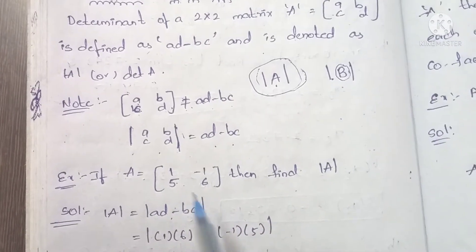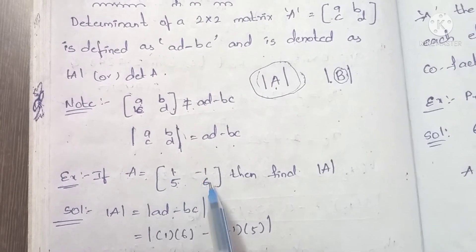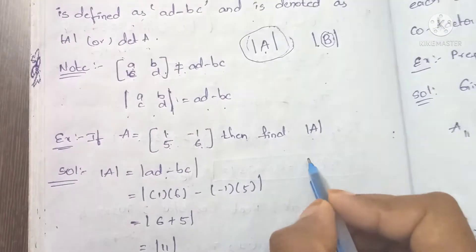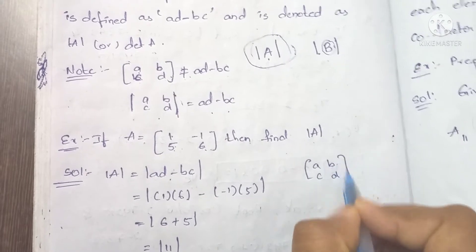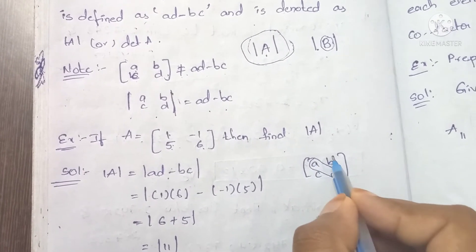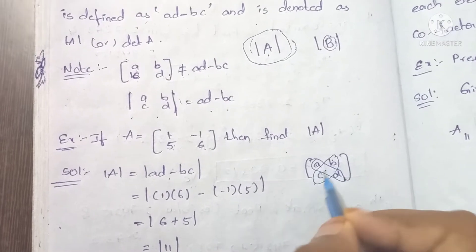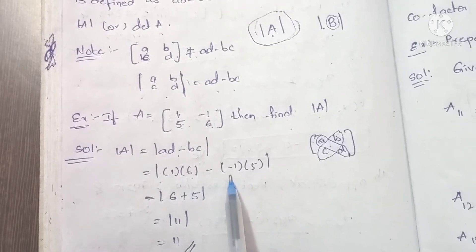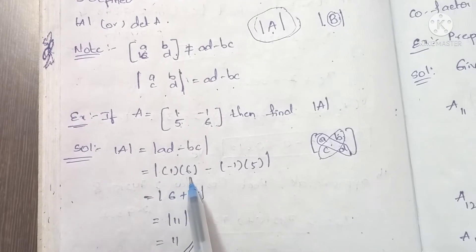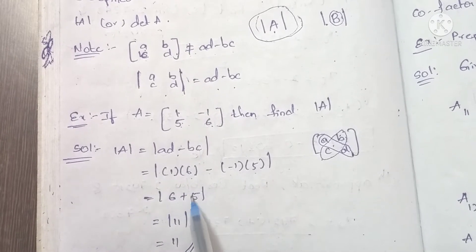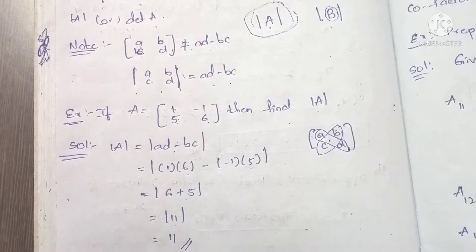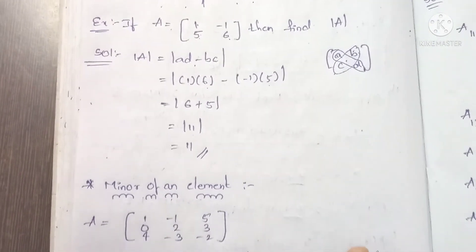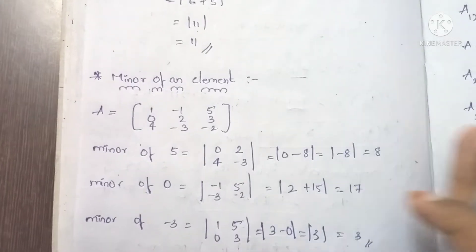Problem: if A equals the matrix [1, 5; -1, 6], find the determinant of A. The formula for determinant of A is ad minus bc. Here a=1, d=6, b=5, c=-1. So 1×6 minus (-1)×5 equals 6 plus 5, which equals 11. The determinant of A is 11.